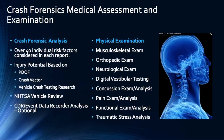This is truly an all-in-one examination — the only assessment needed for determining injury and benefit need after a motor vehicle accident. This assessment encompasses a crash forensics analysis that includes over 40 individual risk factors considered in each report, an injury potential based on principal direction of force, crash vector, and vehicle crash testing research, a National Highway Traffic Safety Administration vehicle review, and an optional CDR or event data recorder analysis. It also includes a complete and full physical examination including musculoskeletal exam, orthopedic exam, neurological exam, digital vestibular testing, concussion exam and analysis, pain exam and analysis, functional exam and analysis, and a traumatic stress analysis based on reports of sensory stimulation at the time of the accident.